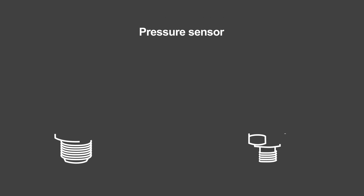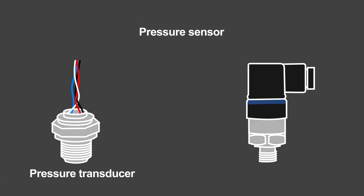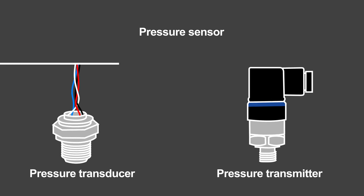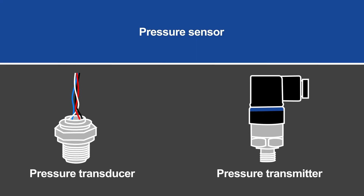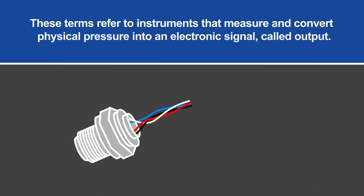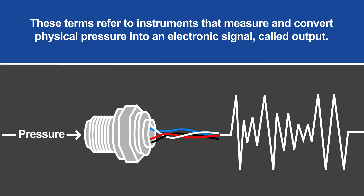The terms pressure sensor, pressure transducer, and pressure transmitter are often used interchangeably, but they can all be grouped together under the umbrella of pressure sensors. These terms refer to functionally similar instruments that measure and convert physical pressure into an electronic signal called output.